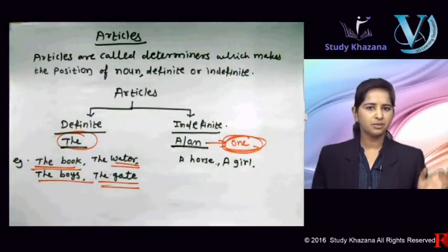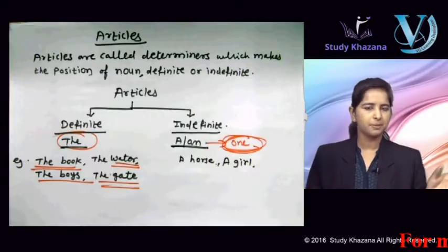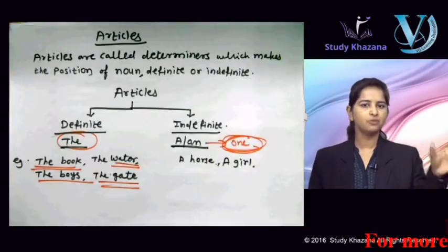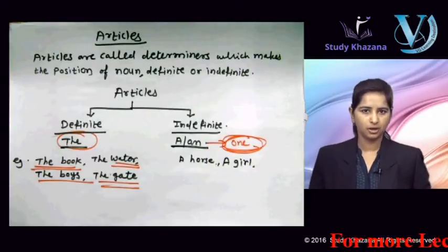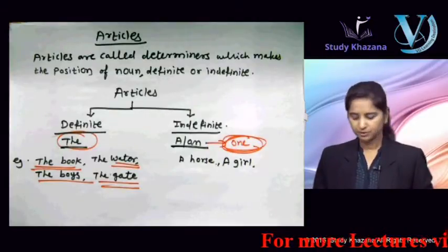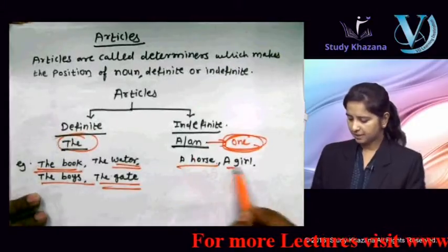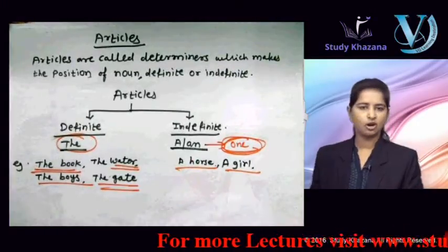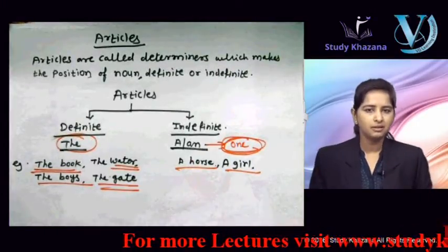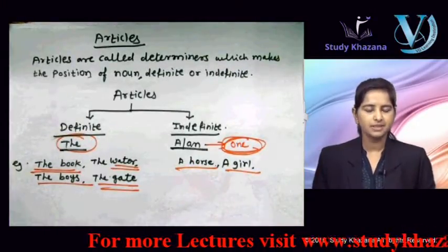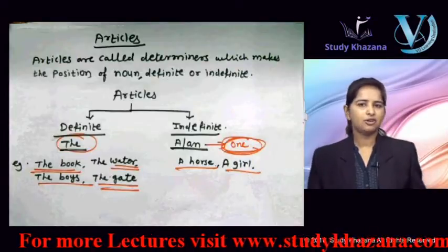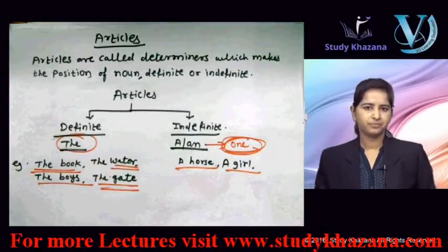'An' ka use hum tab karenge jab aapka pronunciation vowel sound pe hoga. Yahaan example hai: 'a horse', 'a girl' — jaise hum keh sakte hain. For example, 'I like a black horse' — koi bhi kaale color ka ghoda.